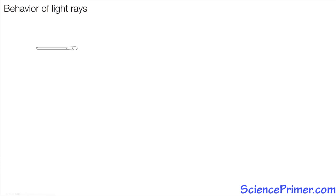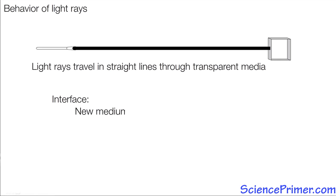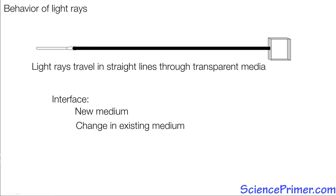The light ray model makes the assumption that light travels in a straight line through transparent media such as air or water. The model also assumes that light rays behave in a predictable manner when they encounter surfaces, such as the interface between different media or the surface of an opaque object. This predictable behavior makes it possible to determine the path a light ray will follow as it moves from its point of origin to wherever it eventually changes into another form of energy, such as heat.